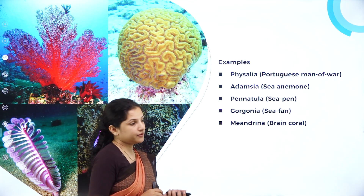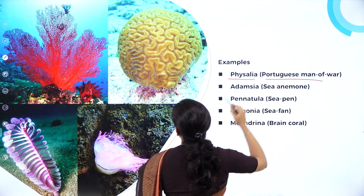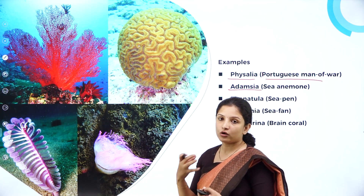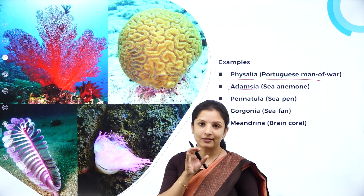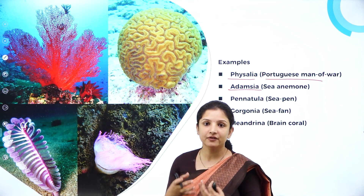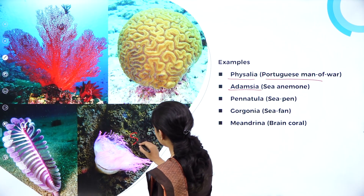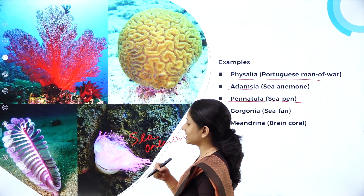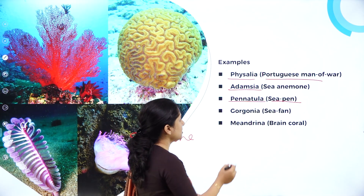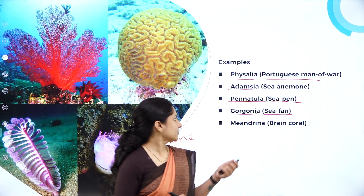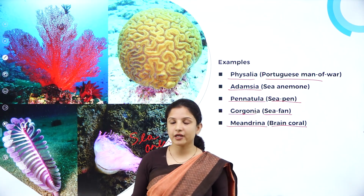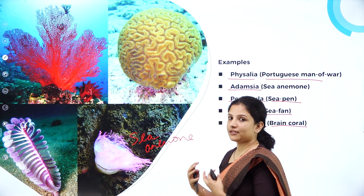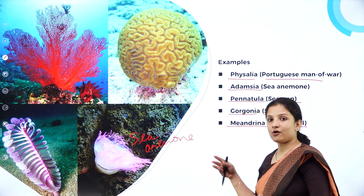Some examples under phylum Coelenterata or cnidarians: Physalia is called Portuguese man of war; Adamsia is called sea anemone — you may have seen clown fishes living with sea anemones; Pennatula is called sea pen because it looks exactly like a pen; Gorgonia is called sea fan because it looks like a fan; Meandrina is called brain coral because it looks like a brain.